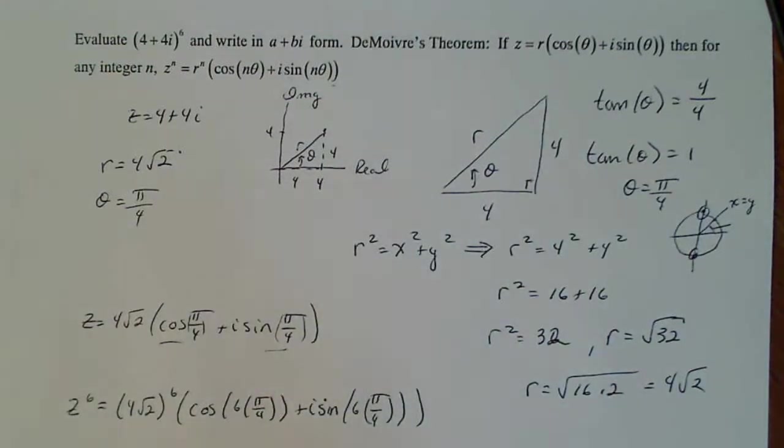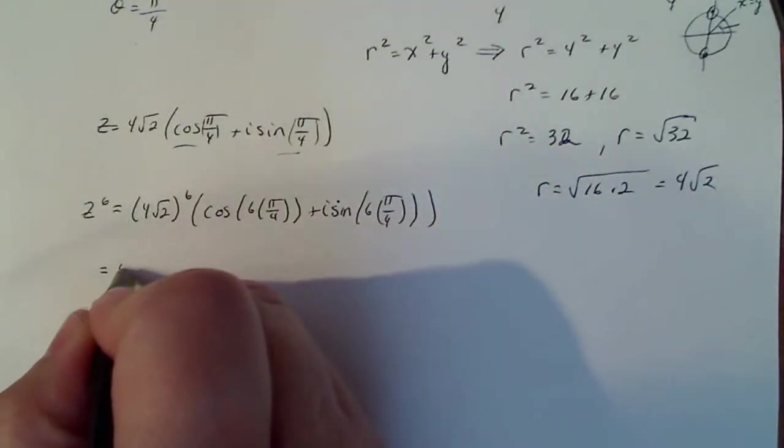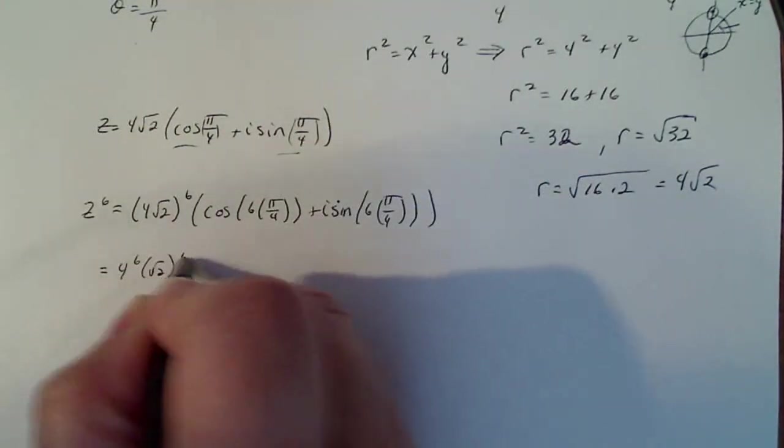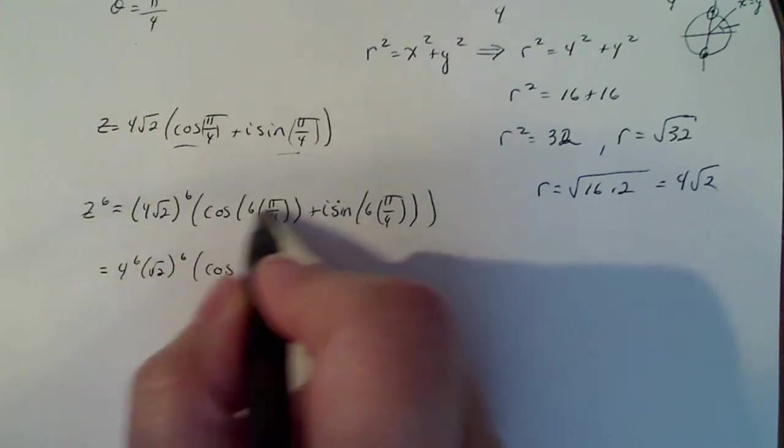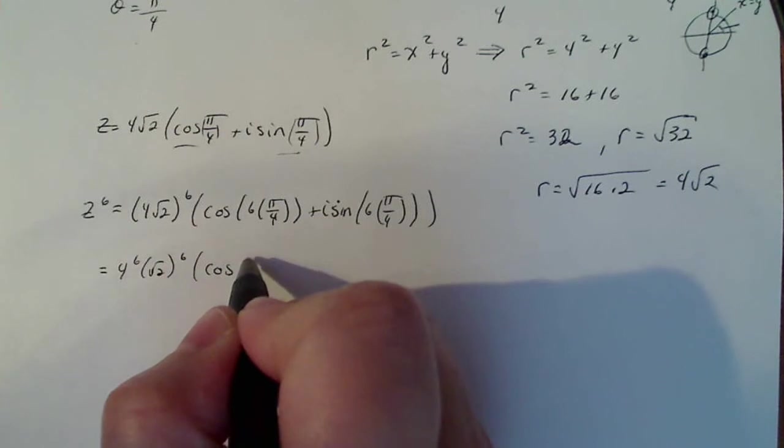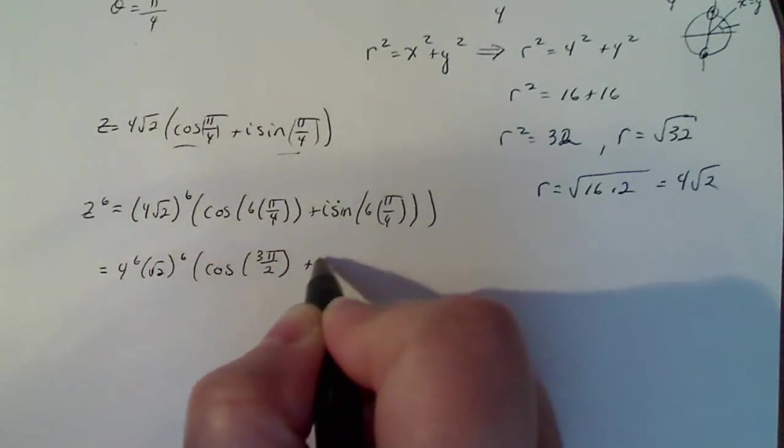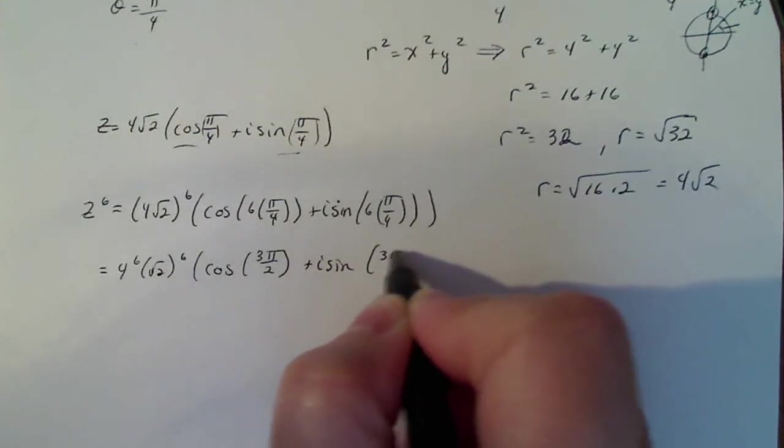Just continuing simplifying, this becomes 4 to the sixth times square root of 2 to the sixth, times cosine of, well, 6 times pi over 4 is 6 pi over 4, and simplifying, that becomes 3 pi over 2, and then i sine 3 pi over 2 as well.